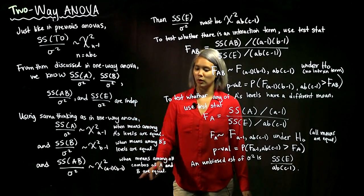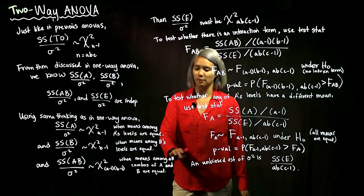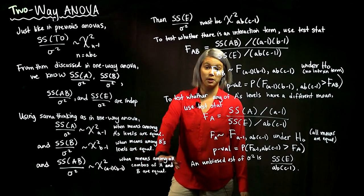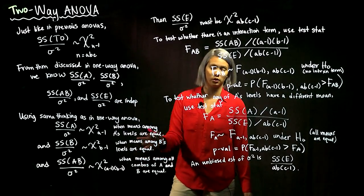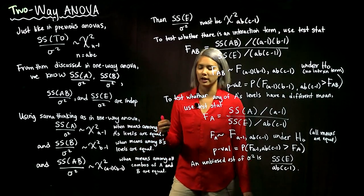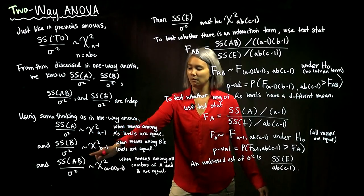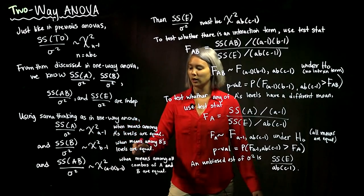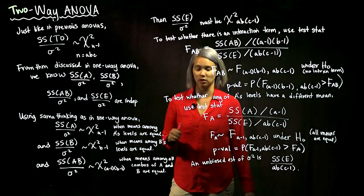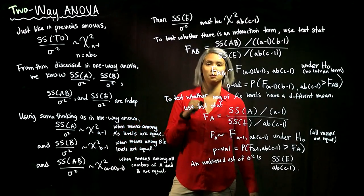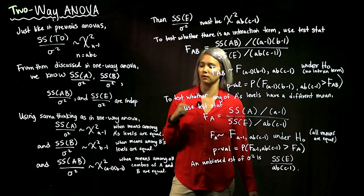Similarly, when the means amongst all combos of A and B are equal — in other words, when there is no interaction term — then SSAB over sigma squared has a chi-squared distribution with a minus 1 times b minus 1 degrees of freedom.